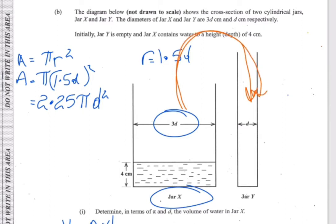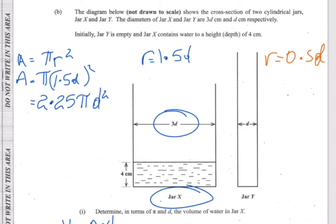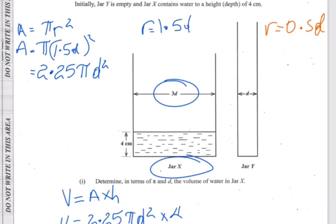Let's look at jar Y and identify some things. The diameter of jar Y is d, which means the radius is half of d, so the radius equals 0.5d.